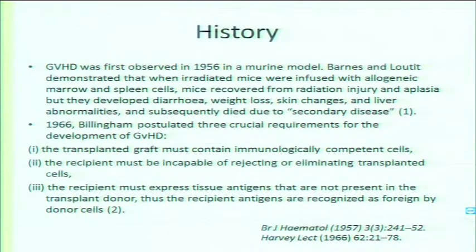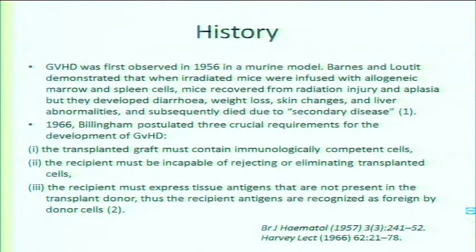In 1966, Billingham postulated three crucial requirements for the development of GVHD. First, the transplanted graft must contain immunologically competent cells. Second, the recipient must be incapable of rejecting or eliminating the transplanted cells. Third, the recipient must express tissue antigens not present in the transplant donor, so the recipient antigens are recognized as foreign by the donor cells. These three caveats remain true: you need an immunocompetent donor cell that recognizes a difference in the recipient and mounts an immune attack.